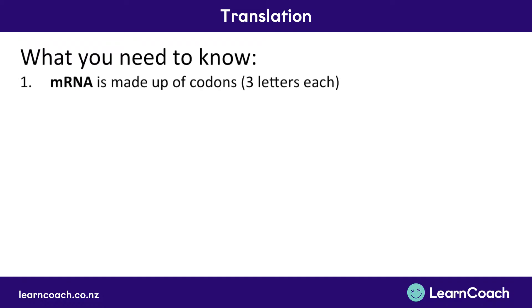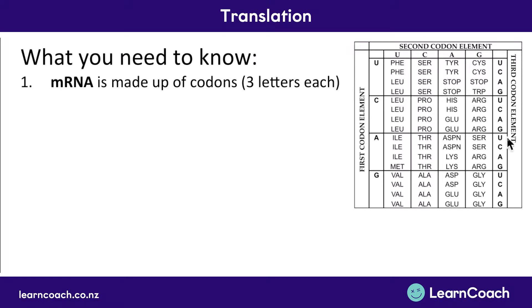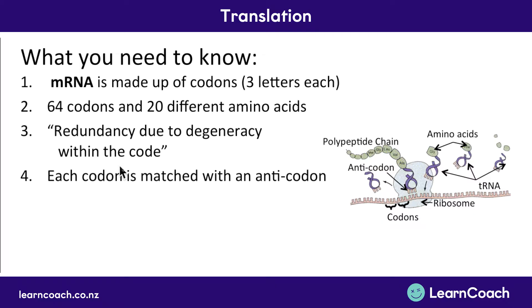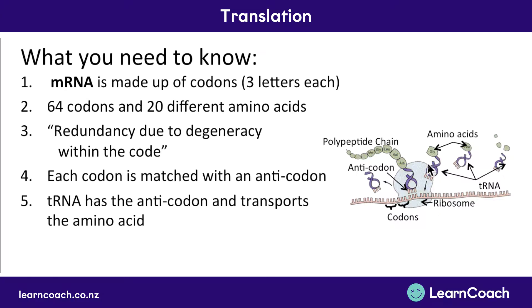Here's what you need to know. mRNA is made up of codons — three letters each. Although there are 64 possible letter combinations, there are only 20 different amino acids. The phrase to remember: there is redundancy due to degeneracy within the code — meaning if the code is a little bit wrong, you'll hopefully still get the same amino acid and your protein will turn out fine. Each codon is matched up with an anticodon — its complementary opposite. tRNA molecules carry the anticodon and transport an amino acid to the ribosome to match up with the mRNA's codon. The ribosome then grabs the amino acid from the tRNA and adds it to the polypeptide chain to make a protein.